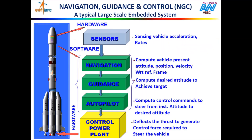Let us learn more about each. First, the NGC system — navigation guidance and control system. When we want to go from one place to another, we need to know our current position. Many of you who have used apps like Google Maps know that first it needs to find our current location. The system that provides the current location of a rocket is called the navigation system. The next task is to find a suitable path for the rocket to reach the desired orbit — guidance system does this job. The automatic feature that takes the rocket to the desired orbit through the path that the guidance system shows is called autopilot.